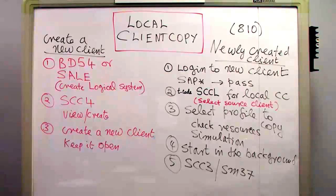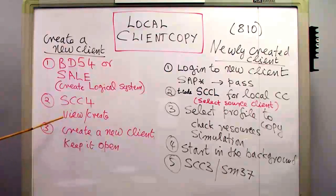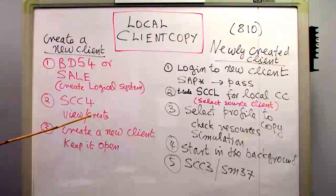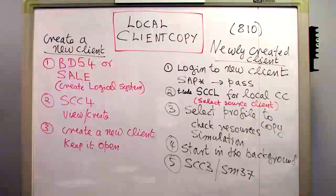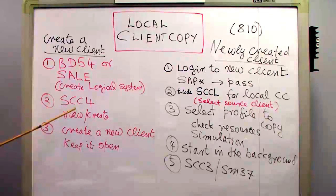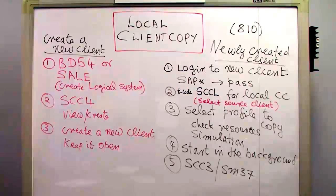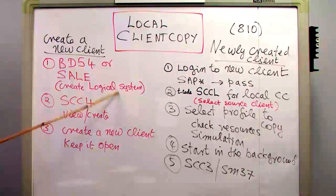After creating a logical system, I type the transaction code SCC4 to view the current clients available in my SAP system. The information comes from a table, so I can add more entries. To add a new entry, I go to change mode, create a new entry, give the client number and a description, and then assign the logical system I created to the client.